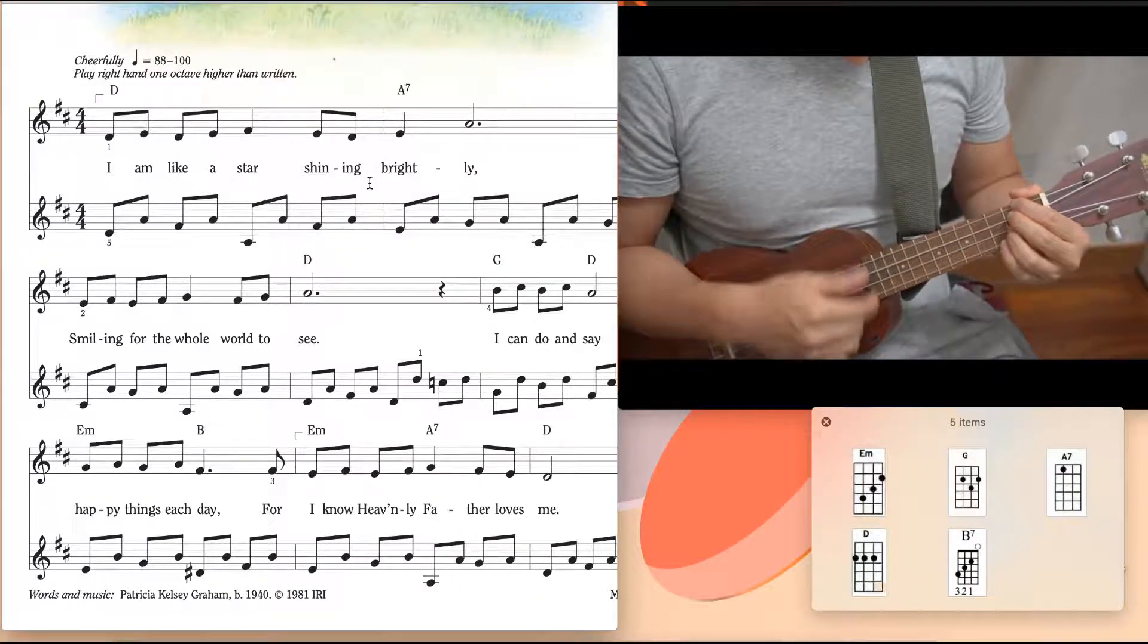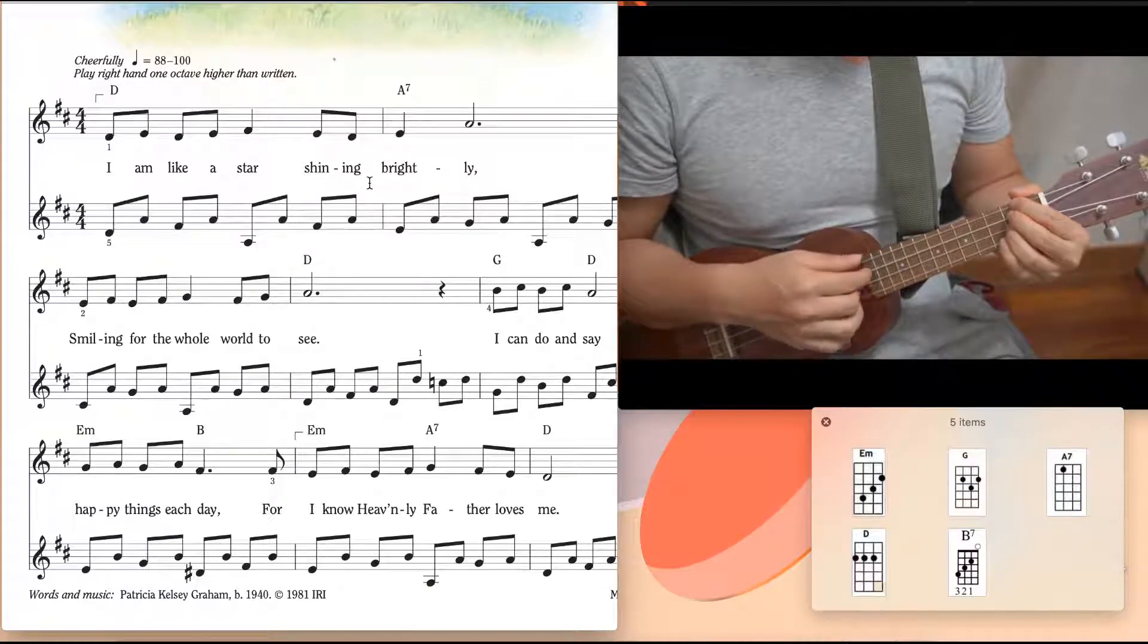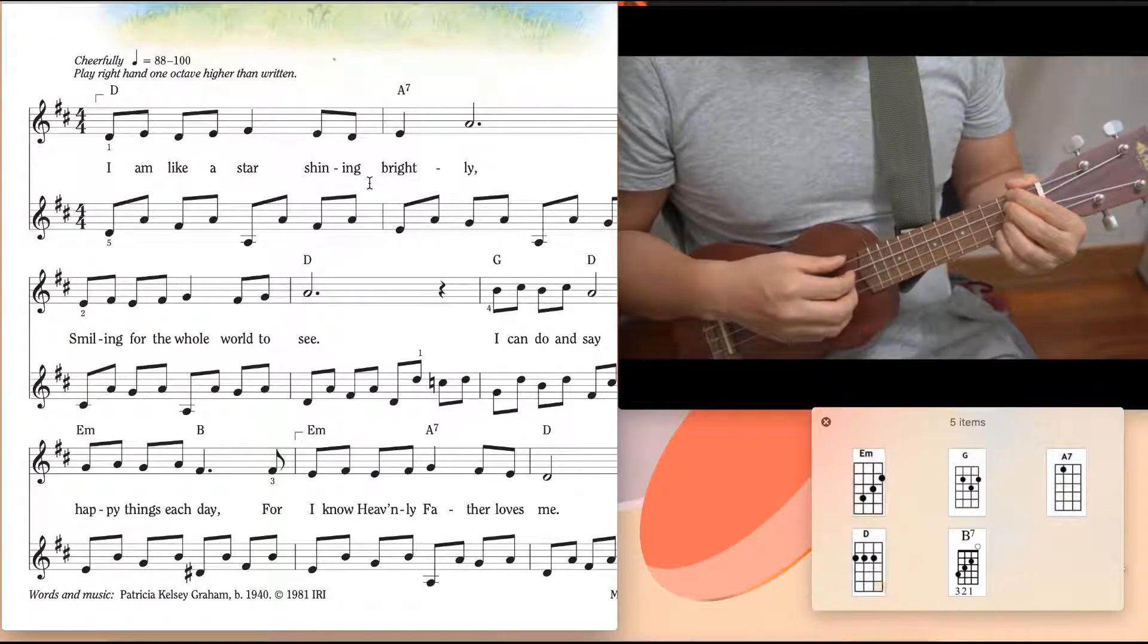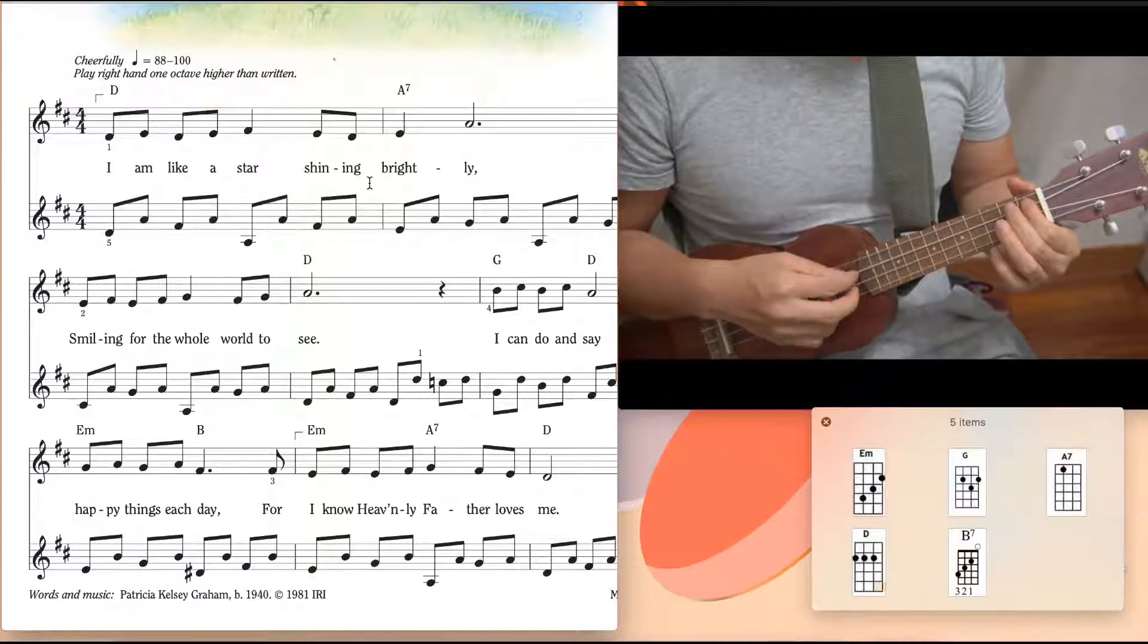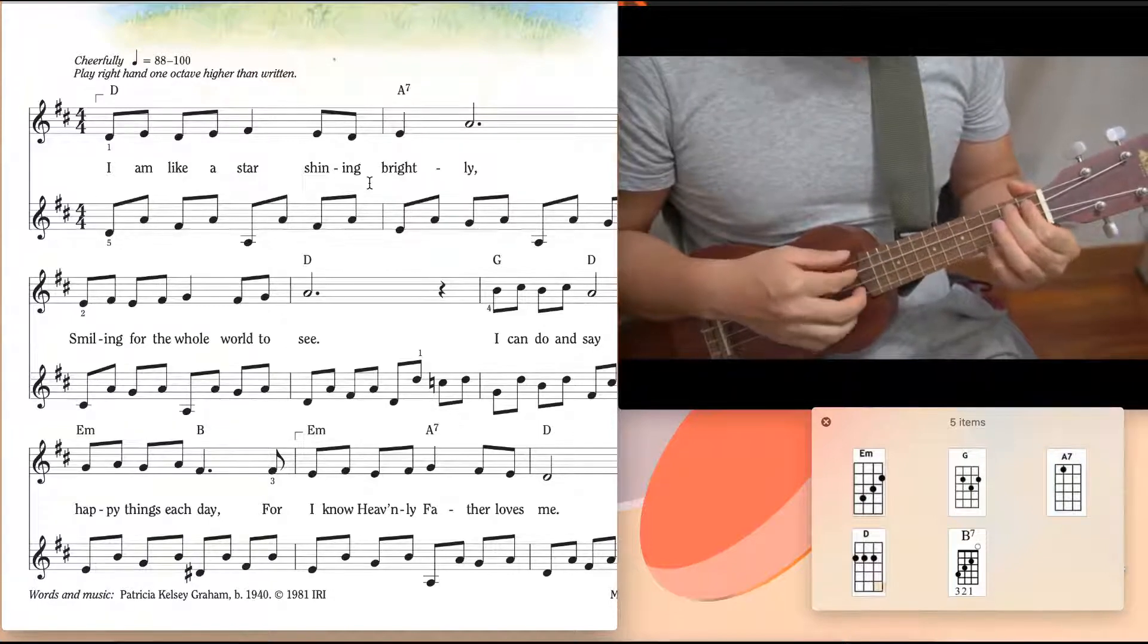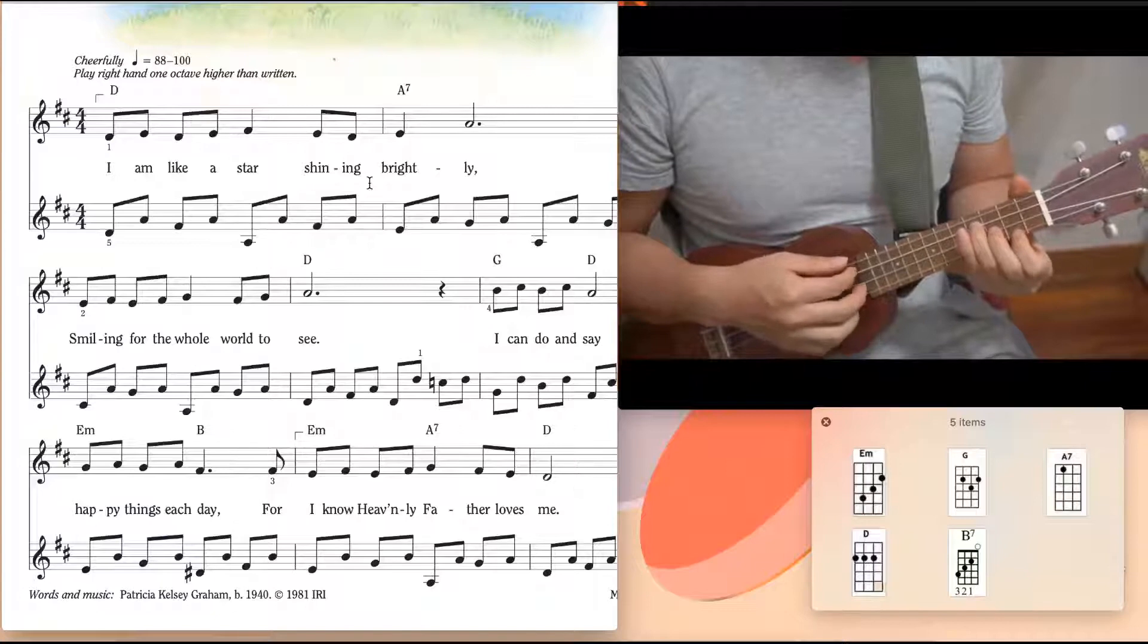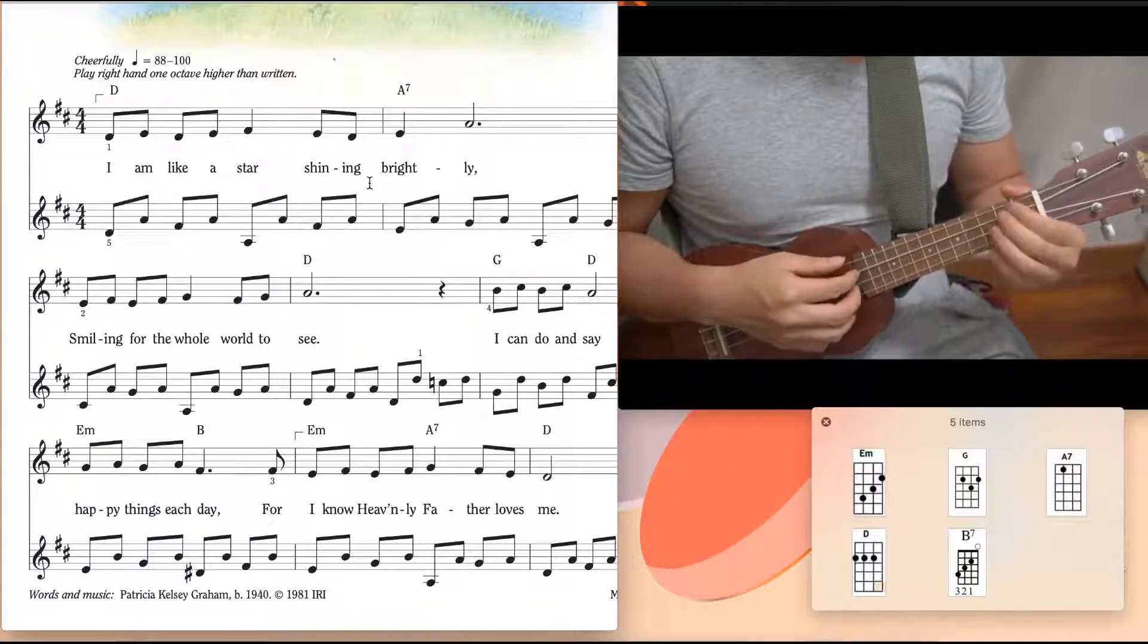Simple one, simple four down strums. We can play finger picking as well. Let's try. I am like a star shining brightly, shining for the whole world to see, I can do and say, happy things each day, for I know Heavenly Father loves me.